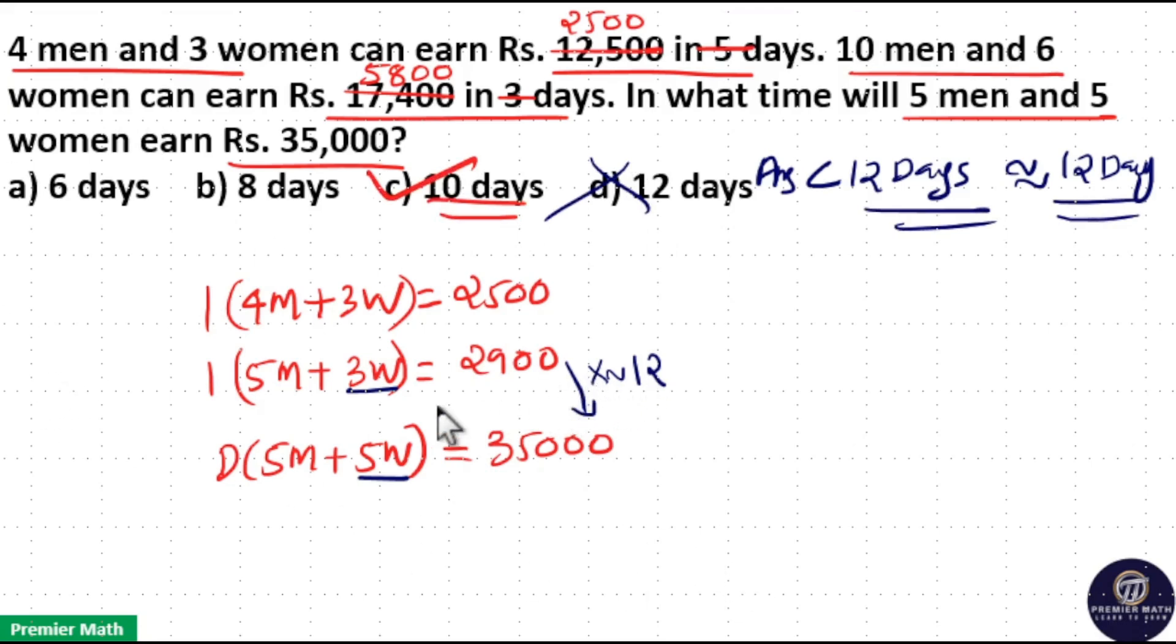Or you can find the answer using regular method. Here difference between $2,900 and $2,500 is $400. And here difference between 3 women and 3 women cancel. 5 men and 4 men is equal to 1 man. So 1 man can earn $400 in 1 day.